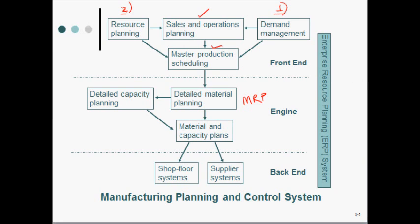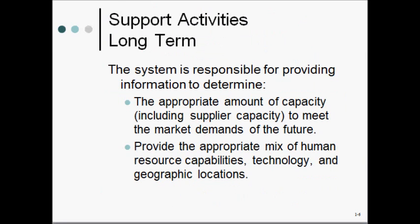Next, we look at some of the support activities that are part of the manufacturing planning and control system. We'll start with the long-term support activities. Recall that the front end is our overall strategy, as reflected in our sales and operations planning. So that's where our long-term planning and long-term support activities have to happen.